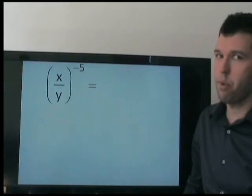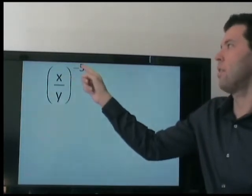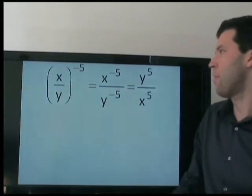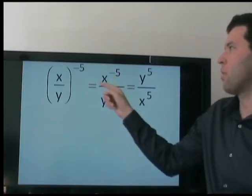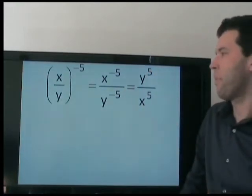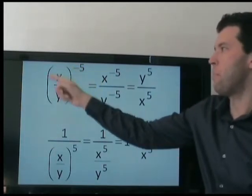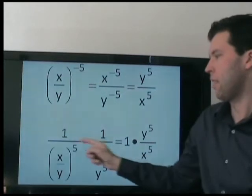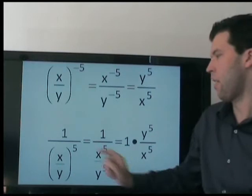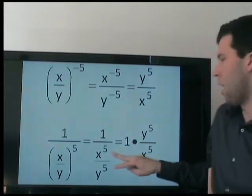There are a few different ways to do this one. One way is to recognize that this is the same as the numerator to the negative 5th power over the denominator to the negative 5th power. Just like before, we use our rule and rewrite these with the opposite exponent — so opposite and opposite. Or we can recognize that this just means we are dividing by the base 5 times: x to the 5th over y to the 5th. Again, dividing by a fraction is the same as multiplying by its reciprocal.